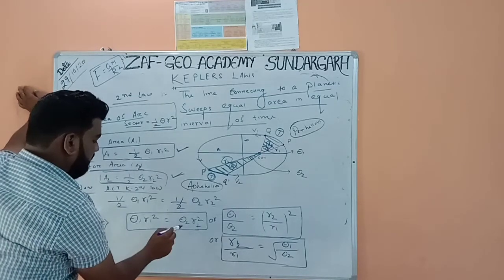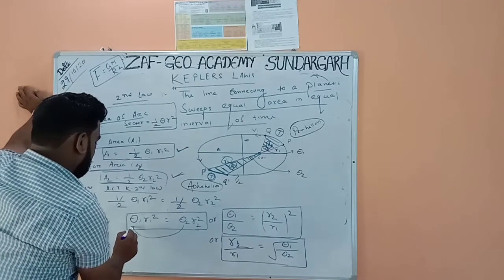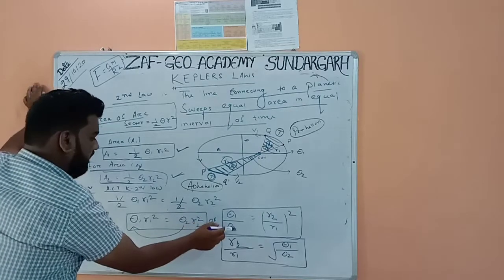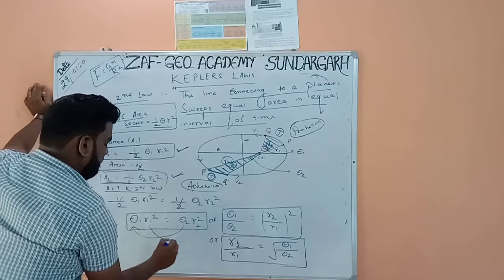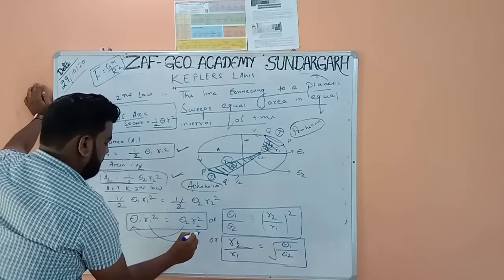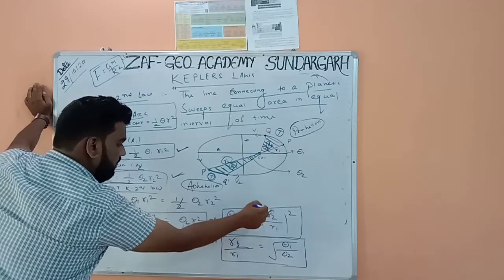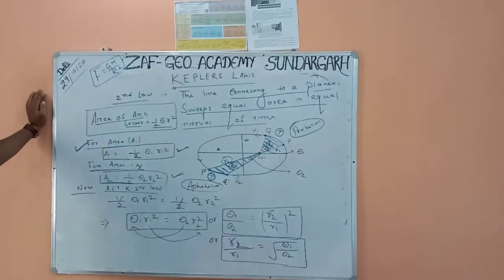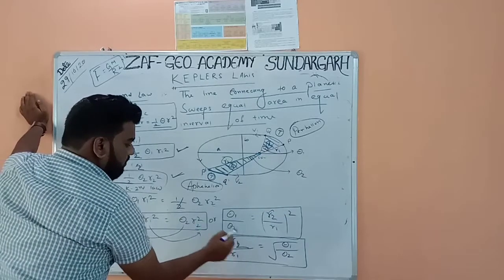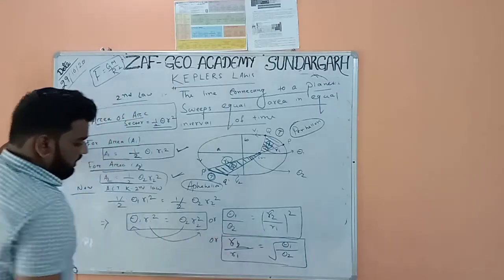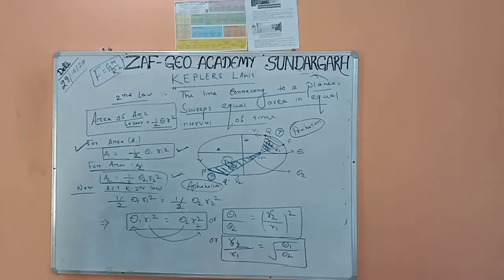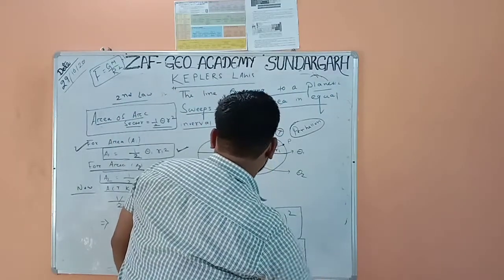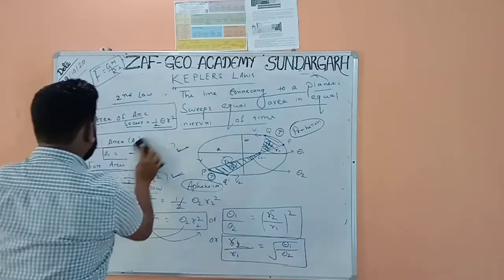Rearranging, θ1/θ2 = r2²/r1², which gives r2/r1 = √(θ1/θ2). That concludes the derivation for Kepler's second law. Now we will learn Kepler's third law.